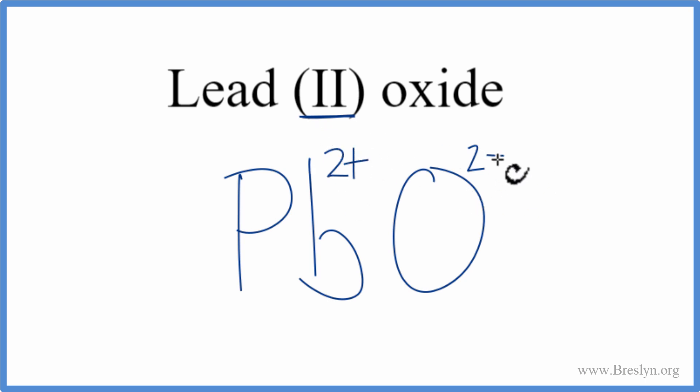2+ and 2-, that adds up to zero. The net charge is zero. And since lead(II) oxide is a neutral compound, these add up to zero, we're done. This is the formula for lead(II) oxide.